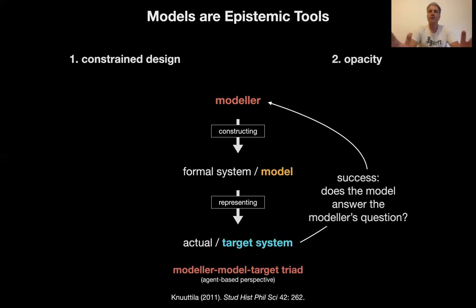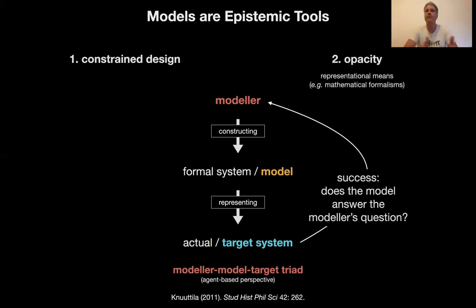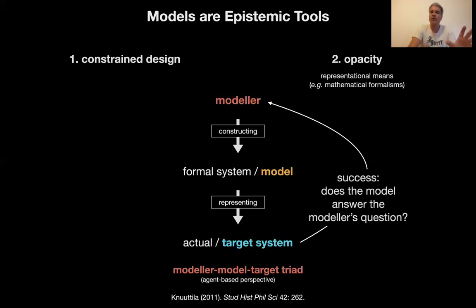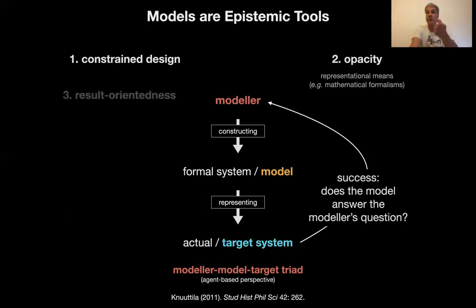The second characteristic Tarja calls non-transparency — I would call it opacity — which means a lot of the means you use to model are not obvious, not explicit. For example, we use mathematical formalisms. Those formalisms often come from other disciplines — they were built to model the solar system, not biological systems. So we have to ask: can you just trust all those established traditional formalisms if we transfer them from physics to biology? We have to be very careful with that.